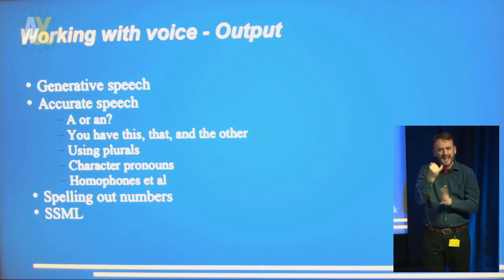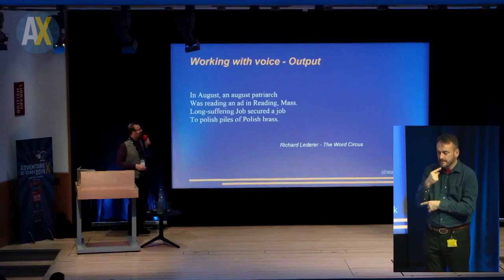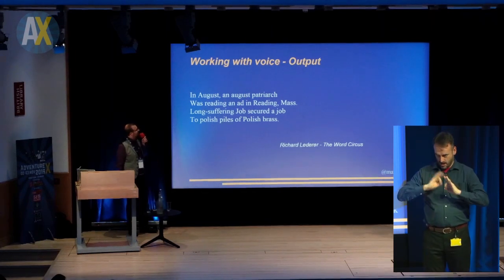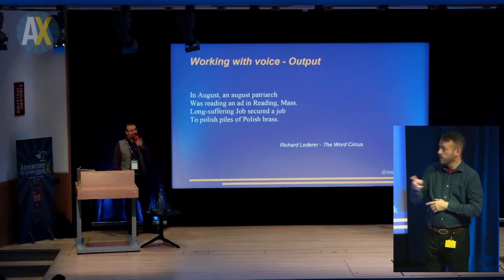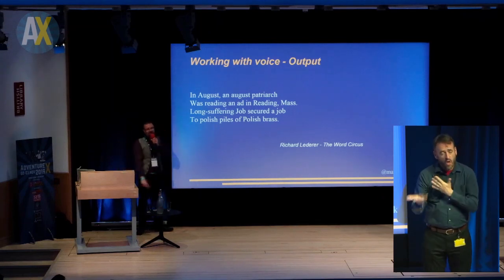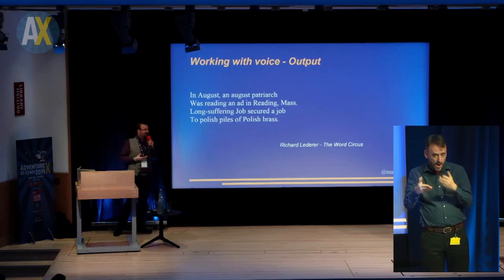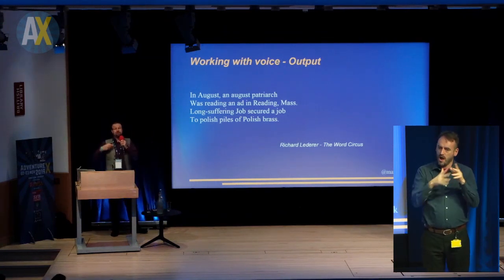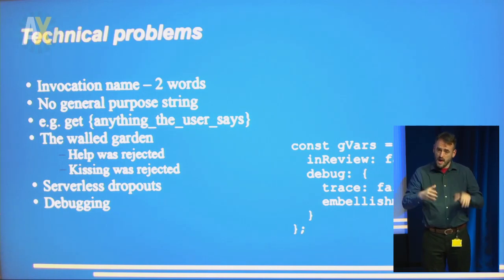It's all done now. If you're interested in more on this, the secret password for Google is SSML — Speech Synthesis Markup Language. In the same way you can put italics and bold around text, you can say whisper this text to Alexa — and it works quite well. For example: in August, an august patriarch was reading an ad in Reading, Massachusetts. Long-suffering Job secured a job to polish piles of Polish brass. You have to mark up every single word in that, including abbreviations. The same thing again — you're writing for speech, not for the screen. Because this I can read, but the computer won't. Words like bass and bass — you have to put in little things that say this is the way to pronounce this word.